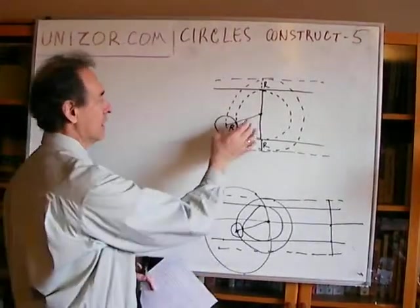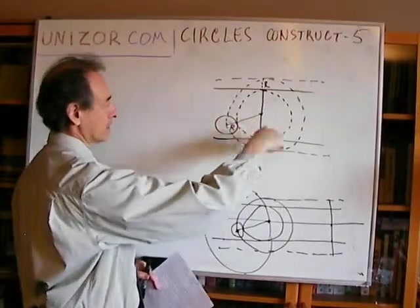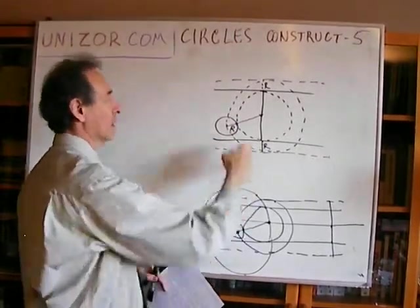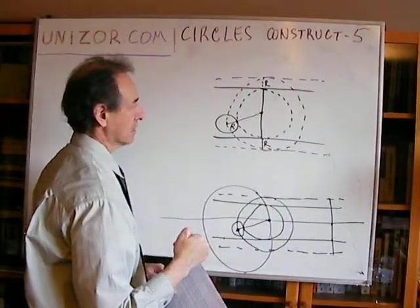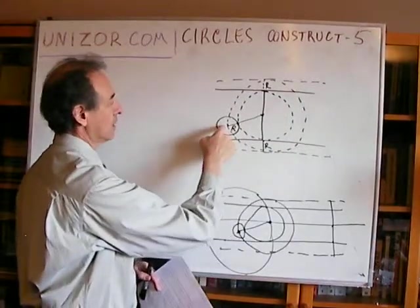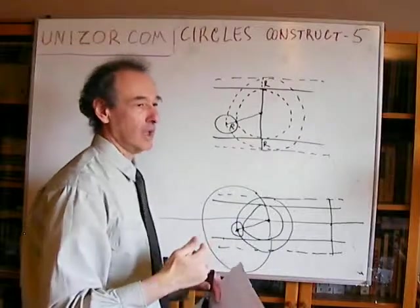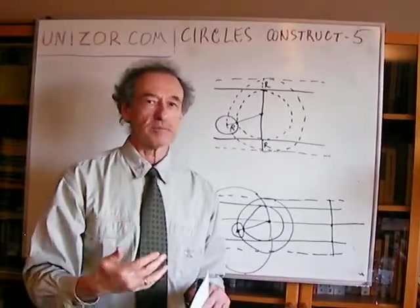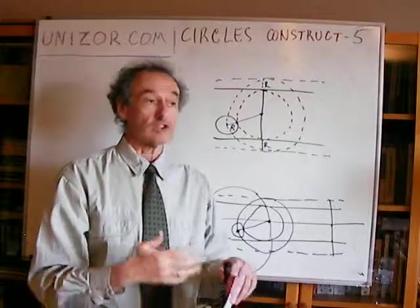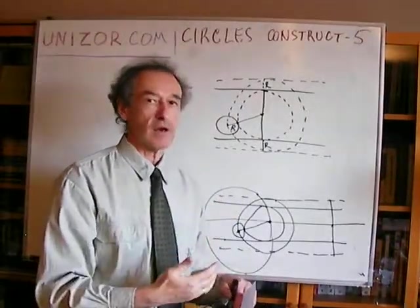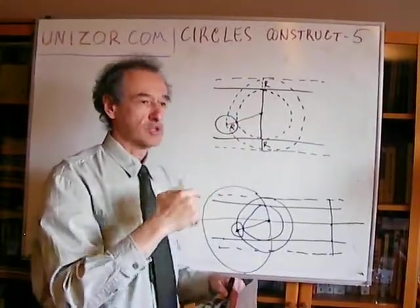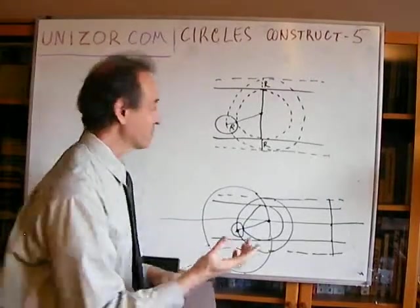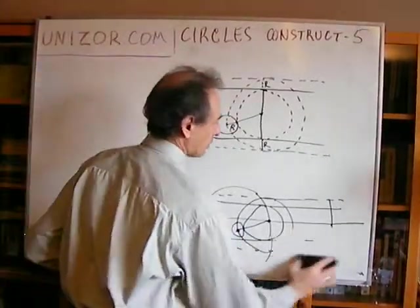The key is to expand the circle we're looking for by the small radius, converting the problem into a simpler one: a circle tangent to two parallel lines and passing through a particular point. This is the general strategy — simplify the problem by reducing it to something already solved or clearly easier. Point is simpler than circle.